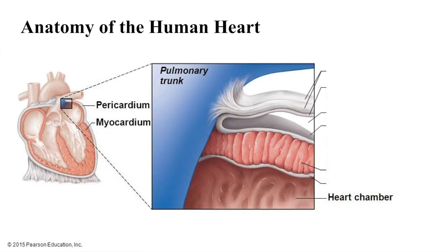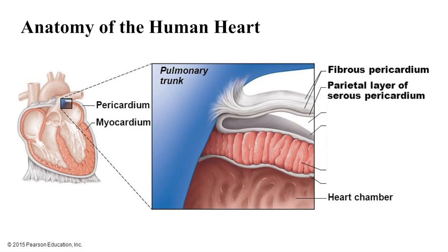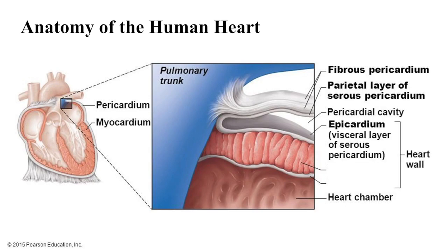The heart is enclosed within a double-walled sac called the pericardium. The loose-fitting superficial part of the sac is the fibrous pericardium. Deep to it is the serous pericardium, which lines the internal surface of the fibrous pericardium as the parietal layer. At the base of the heart, the parietal layer reflects back to cover the external surface of the heart as the visceral layer, or epicardium. Serous fluid produced by these layers allows the heart to be in a relatively frictionless environment.